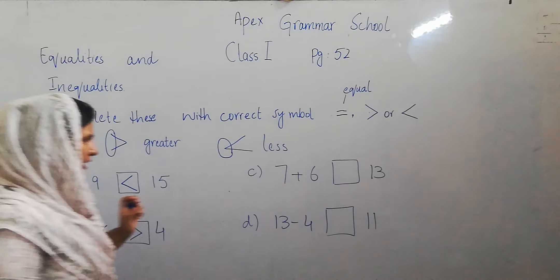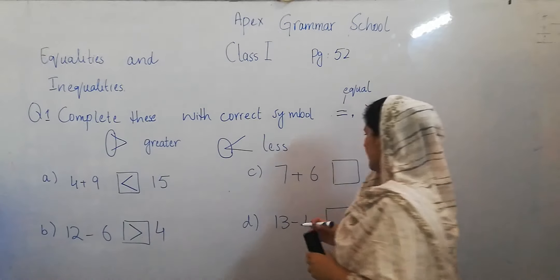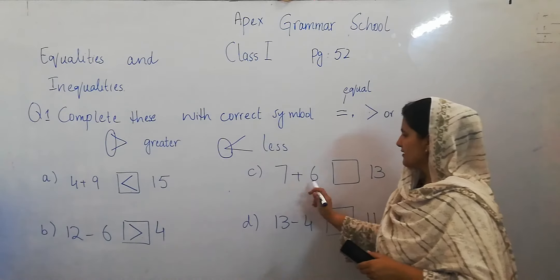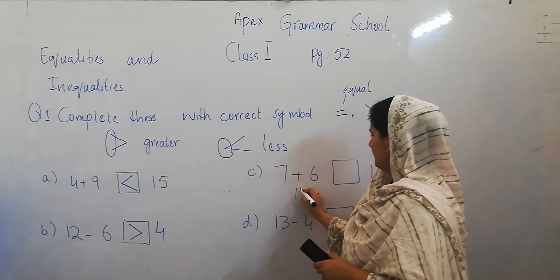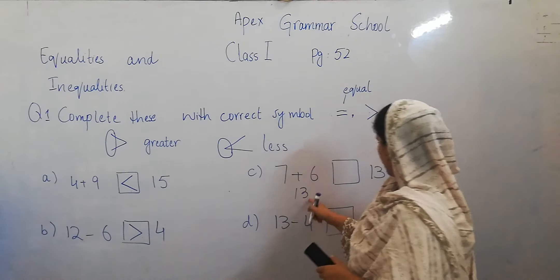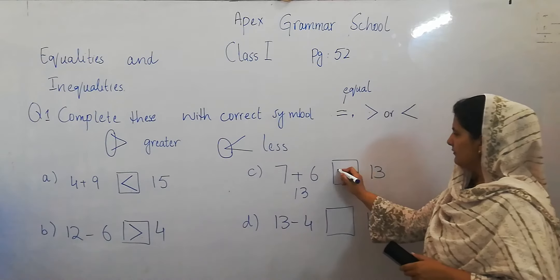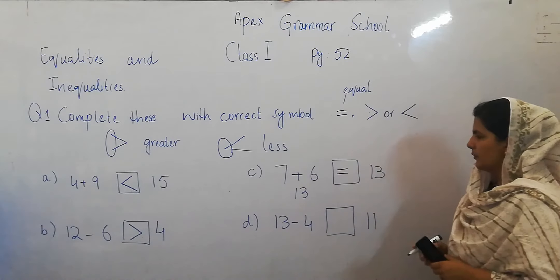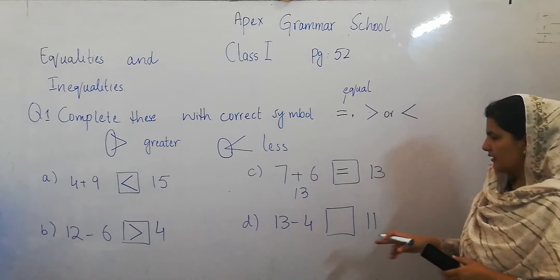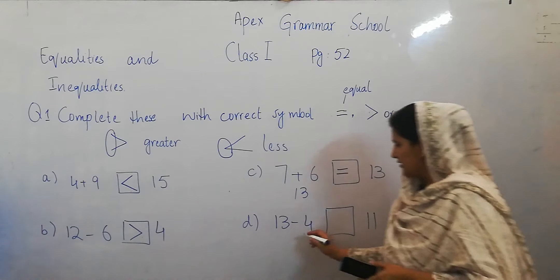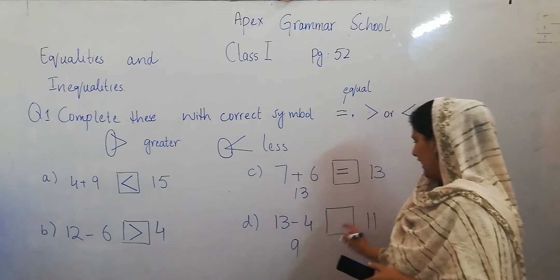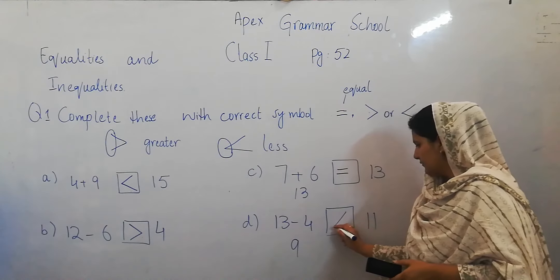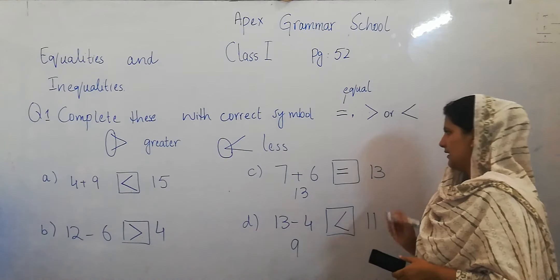Now next: 7 plus 6 is 13, and this is also 13 — so these are equal. Sign is equal. 13 minus 4 is 9. And 9 is less than 11, so the sign is less than.